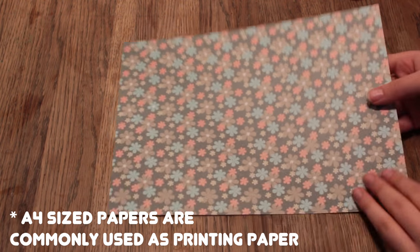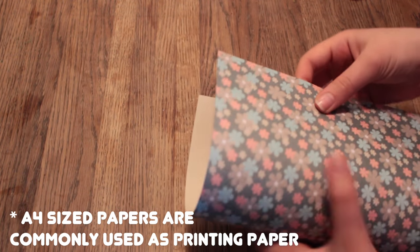Now take your A4 size construction paper and then fold it in half and then cut out one of the halves.